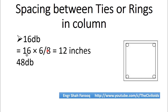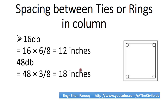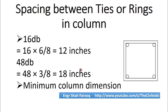The second equation is 48db. The bar used for ties or rings is a number 3 bar, so the diameter is 3/8 inches. Multiplying 48 by 3/8 we get 18 inches. The third equation is the minimum column dimension. The cross-sectional dimension of this column is 15 by 15 inches, so the minimum dimension is 15 inches. For a rectangular cross-section you would take the minimum of the two dimensions.